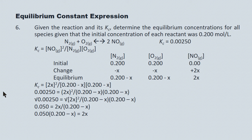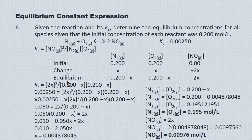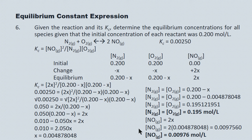After taking the square root, we cross multiply and distribute through the brackets. Bringing the 0.050x term to the right and dividing, we get x = 0.00487. Plugging that into the equilibrium concentrations from the ICE table: both N2 and O2 are 0.200 minus x = 0.195 mol/L, and the NO concentration is 2x = 0.00976 mol/L.